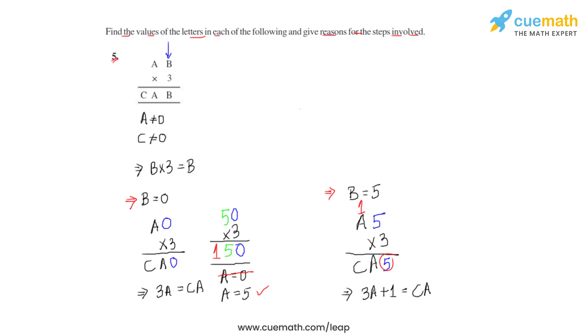But we've already seen in the previous condition that 3 times A equals CA and not 3 times A plus 1. Hence our assumption of B to be 5 stands out to be incorrect, and we'll have to go with the assumption that B equals zero.